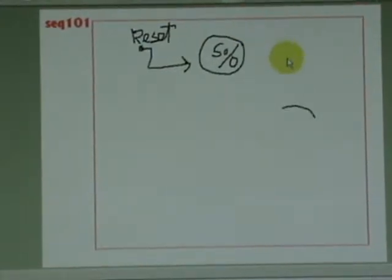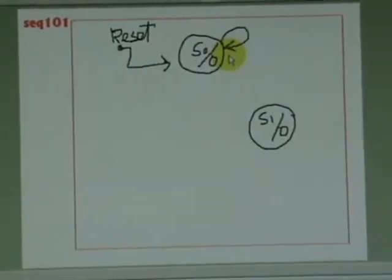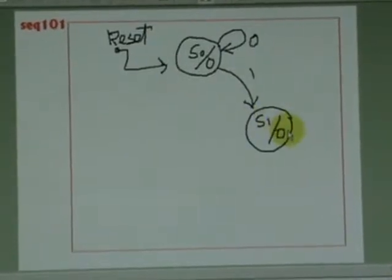It is a Moore machine. When input is 0, it remains in state S0. But if it is 1, it will target to S1.